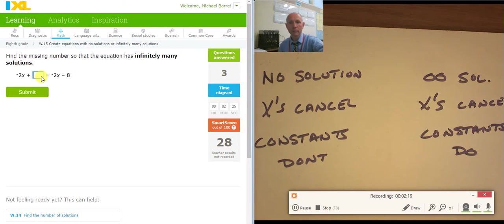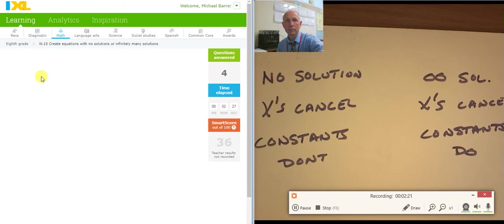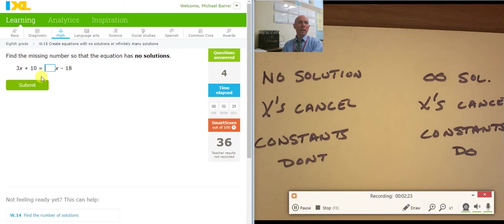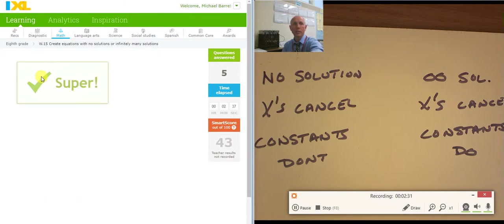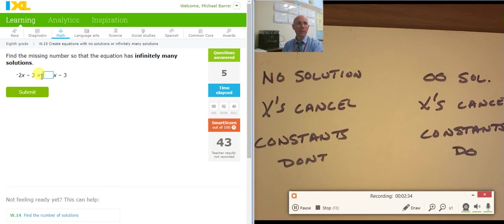Let's get back in there. No solution. No solution means that the 3's are going to cancel. Negative 3x has to cancel with, excuse me, 3x has to cancel with 3x. There's no solution. Infinite solution, negative 2x has to cancel with a negative 2x. There we go. They'll cancel out and the negative 3's will cancel out. Everything cancels.